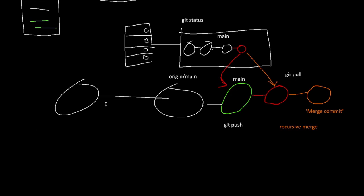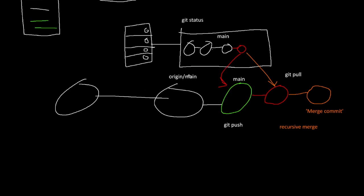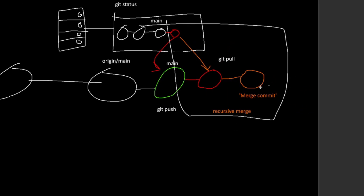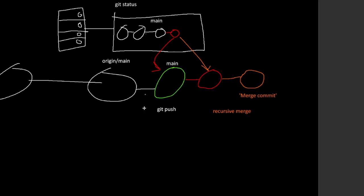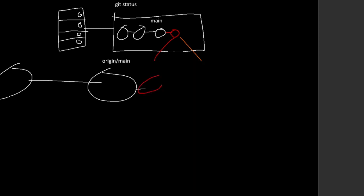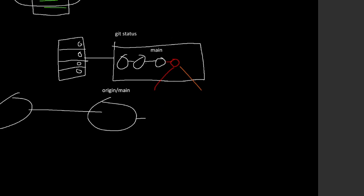This is a recursive merge rather than a fast forward. If you didn't make any edits yet, you could just simply append the remote commit onto the end and update your current local main branch. The remote is usually called origin — that's just the standard name — the same way that the main branch is called main.